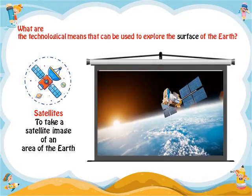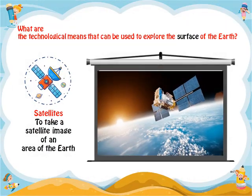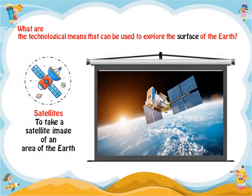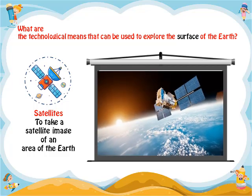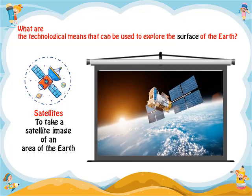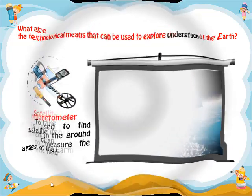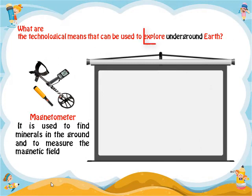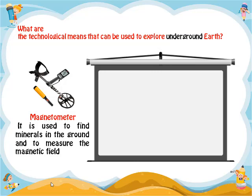Satellites are used to obtain more details and information about an area through satellite images of the Earth's surface. What are the technological means that can be used to explore underground Earth? The magnetometer is a device that measures the magnetic field and is used in the exploration of minerals in the ground.